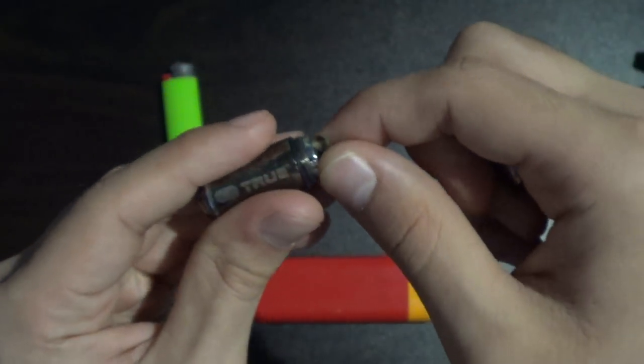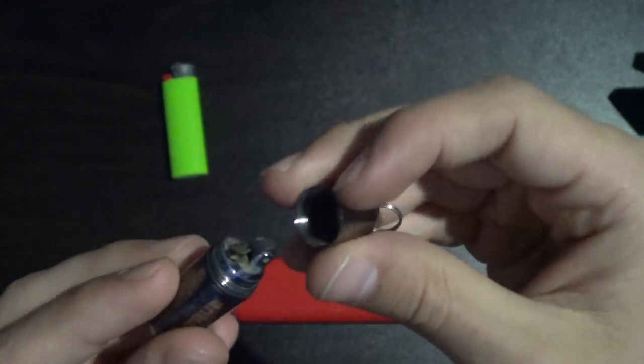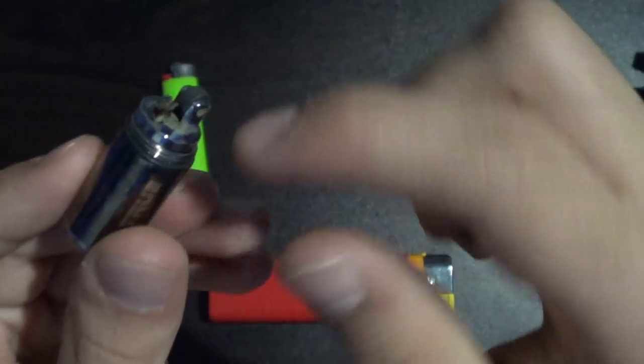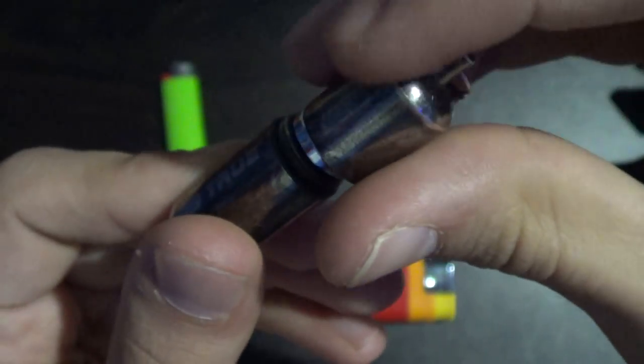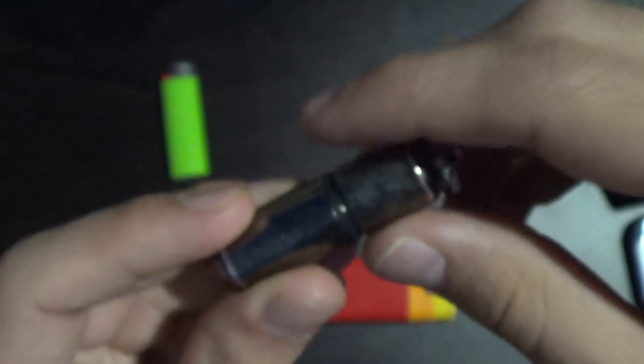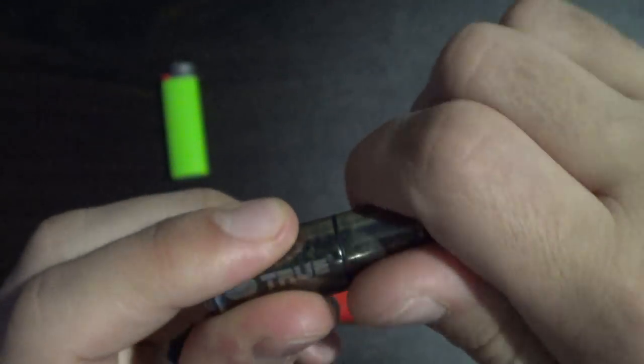And then to refill it, this part comes off. I'm not gonna do that right now because it'll probably all fall apart on me. But it has a rubber seal around the edge. So this can actually last a very long time, and the fuel will not evaporate because it's airtight. So this one is really cool.